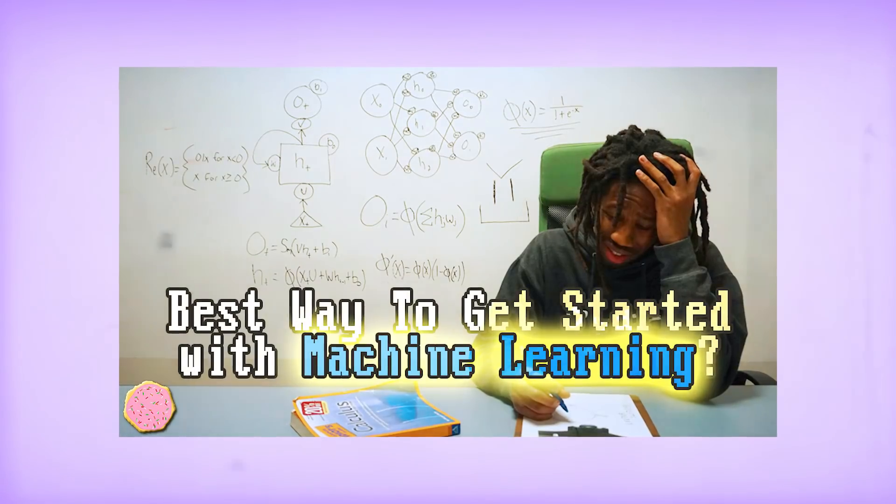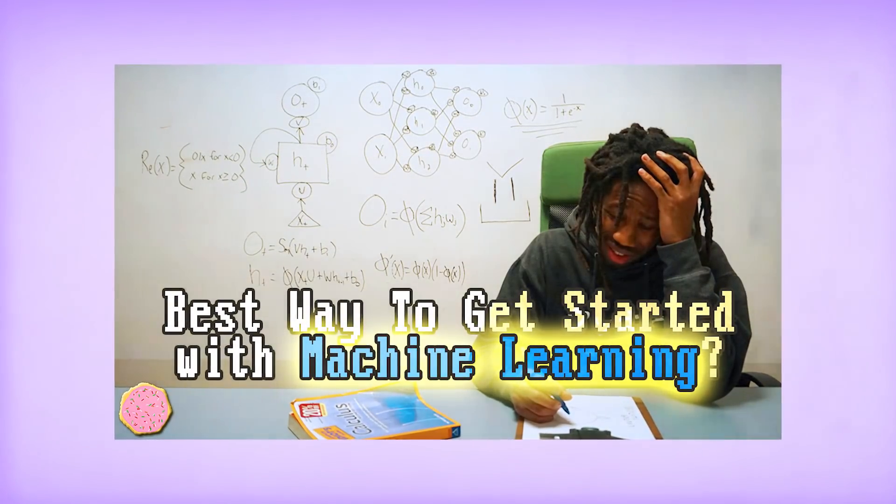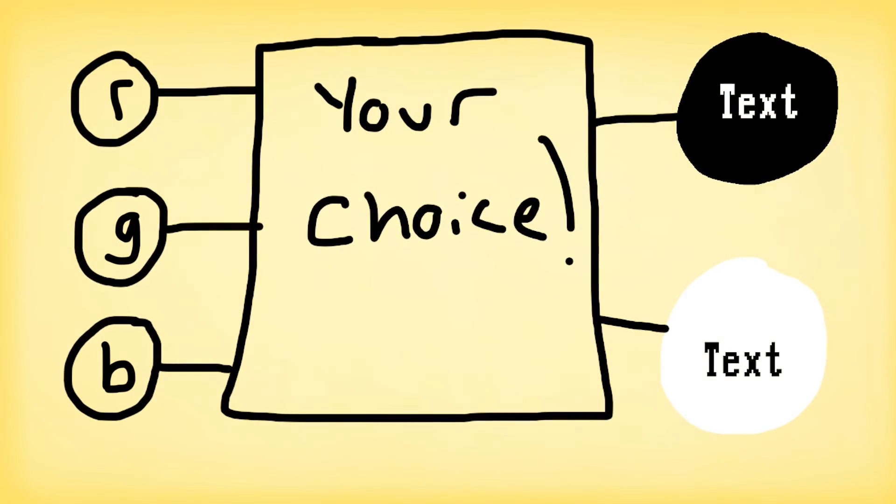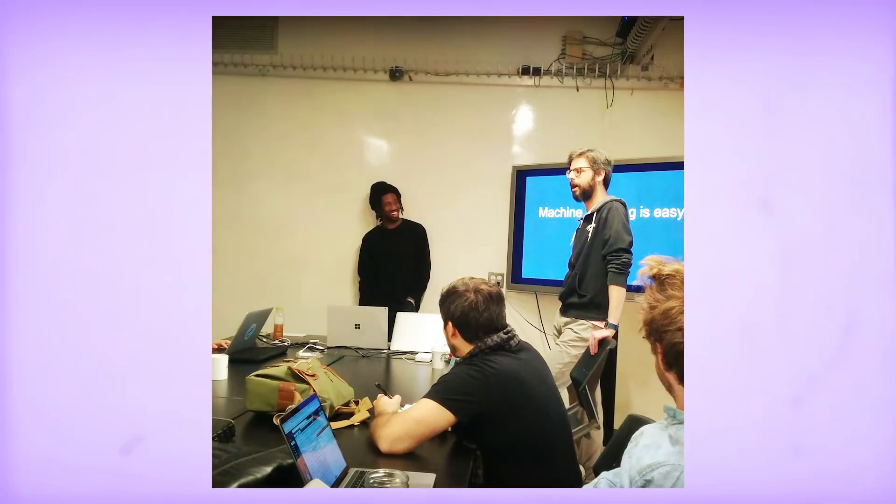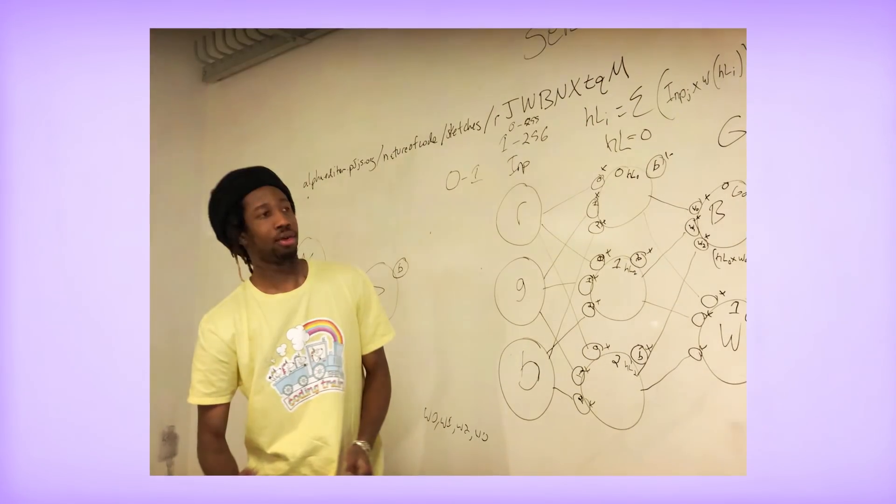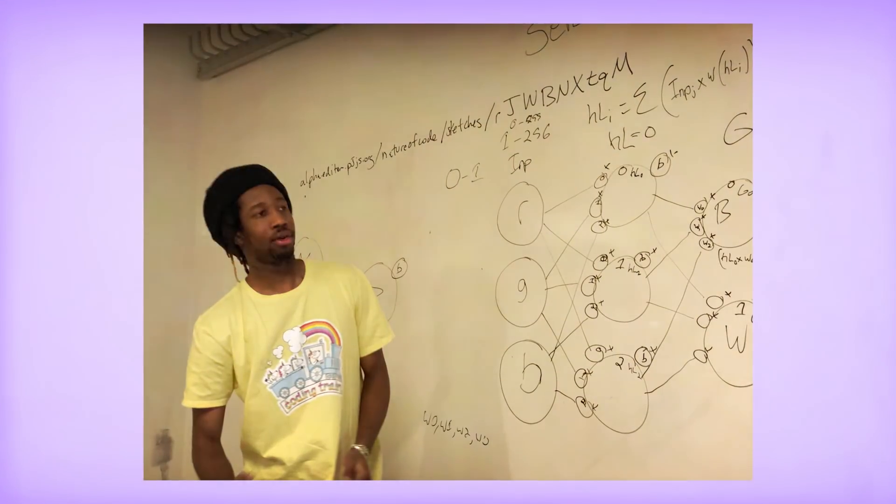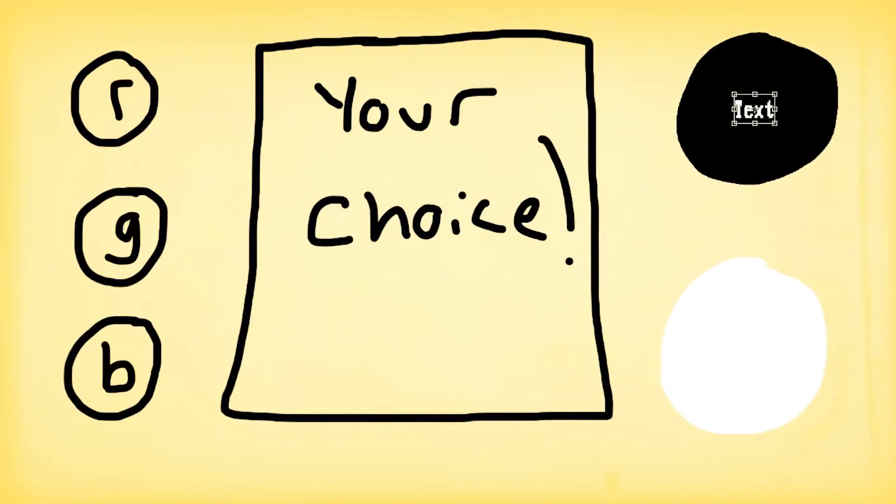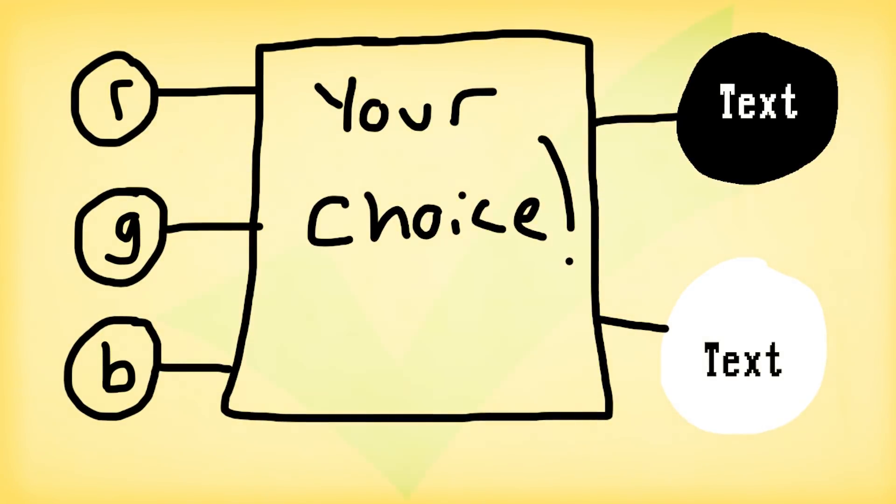But today, I have something exciting for you. Remember in my how to get started with machine learning episode, where I mentioned to start with a simple color predictor as your first neural network? Well, all this week, I've been given the amazing opportunity to visit NYU's ITP and work on some projects. One project was a workshop where I demoed how to build your own neural network from scratch to ITP students, and I used that exact example for the workshop.